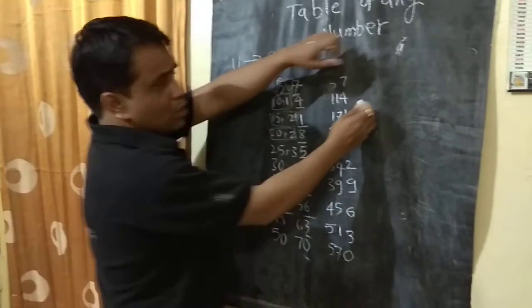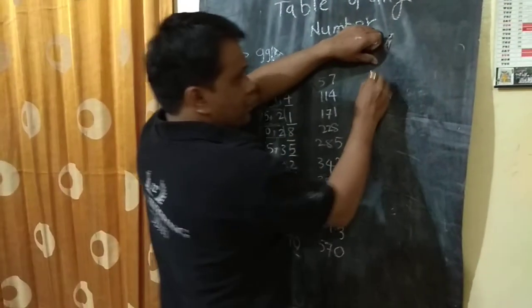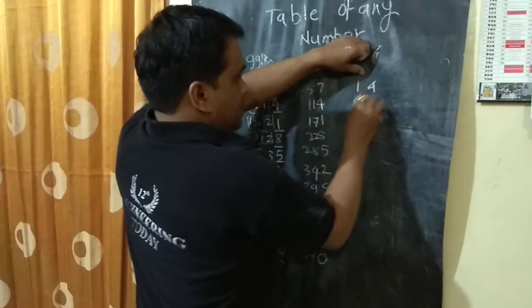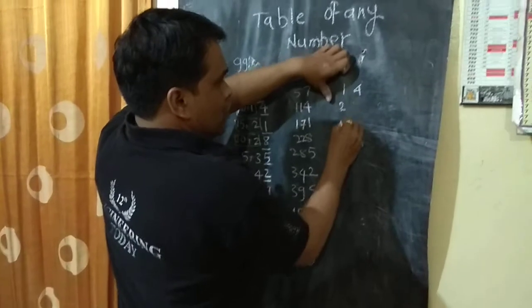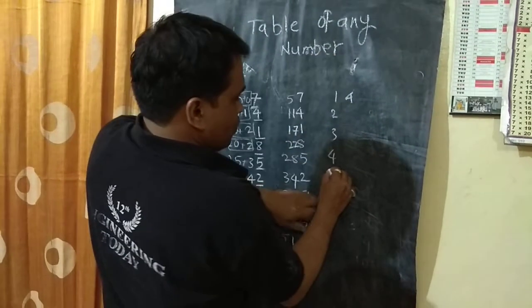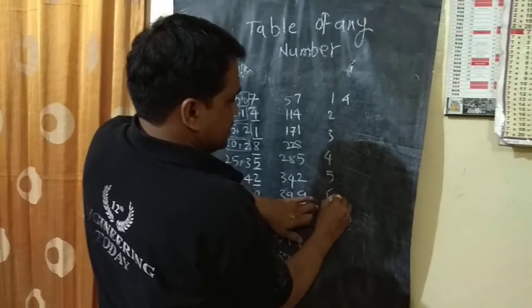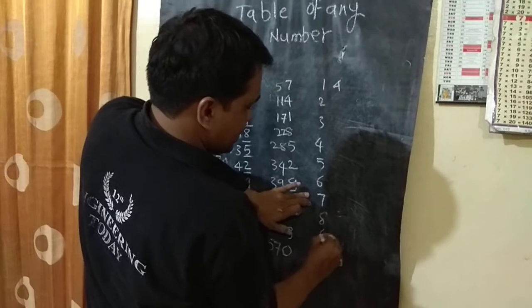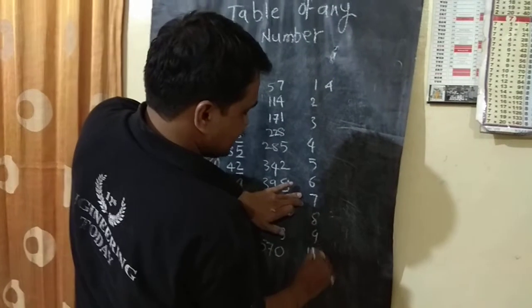Now we will write the table of 40. Write the table of 1, 2, 3, 4, 5, 6, 7, 8, 9, and 10.